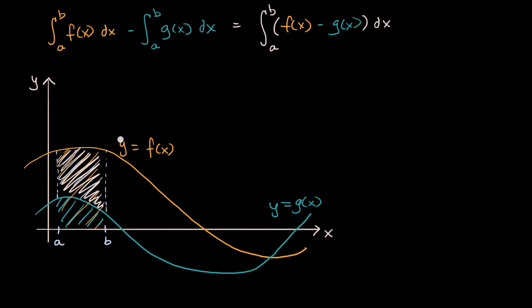Now, you might be thinking: okay, that worked when both functions were above the x-axis. But what about the case when f of x is above the x-axis and g of x is below the x-axis? So for example, let's think about this interval right over here — let's say this is x equals c and this is x equals d. What if we wanted to calculate this area that I am shading in right over here?